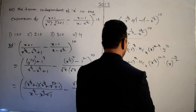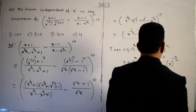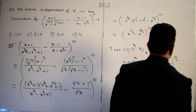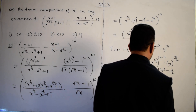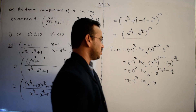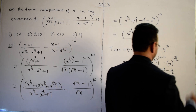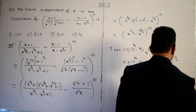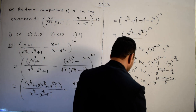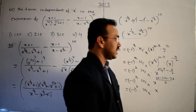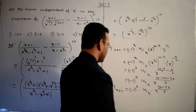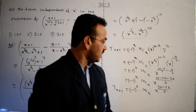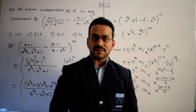T(r+1) = (-1)^r · 10Cr · x^((10-r)/3) · x^(-r/2) = (-1)^r · 10Cr · x^((10-r)/3 - r/2). Combining the exponents: (10-r)/3 - r/2 = (20 - 2r - 3r)/6 = (20 - 5r)/6. So the general term is (-1)^r · 10Cr · x^((20 - 5r)/6).